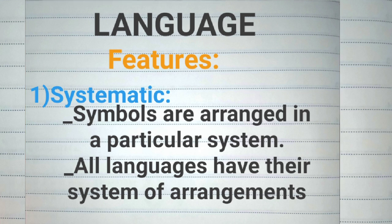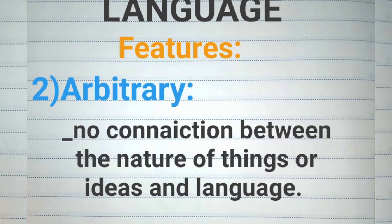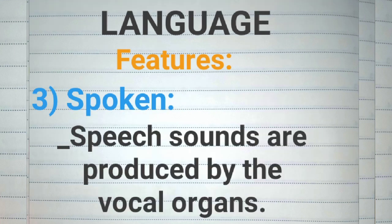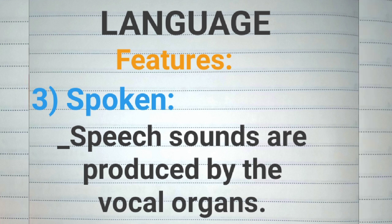First, it is systematic, because it implies an orderly arrangement — signal units used by language are organized according to pattern. Second, it is arbitrary, meaning there is no inherent or logical relation or similarity between given features of language and their meaning. There is no uniformity.